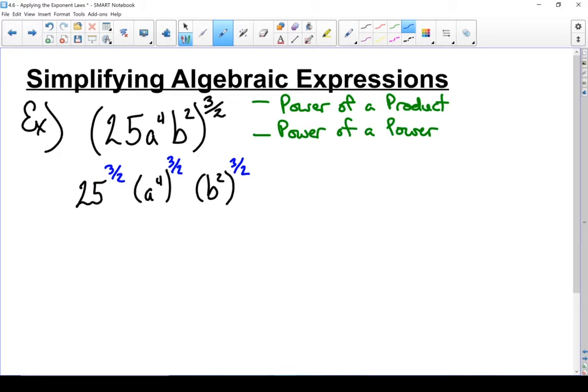Let's deal with that 25 first. We've got a number to the 3 halves power. If you go back to the previous section, and you remember how to deal with fractional exponents. The denominator becomes the index of a radical, and the numerator becomes the power. So this becomes the square root of 25, because 2 is in my denominator, taken to the power of 3.